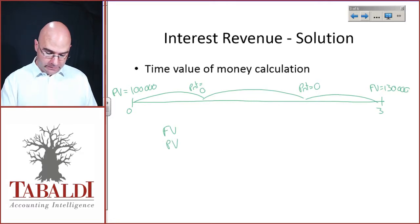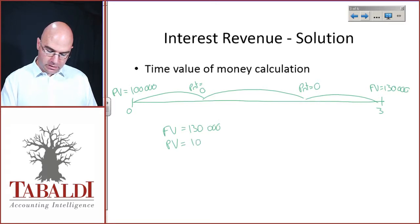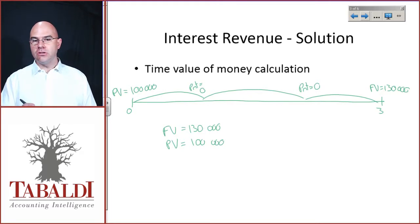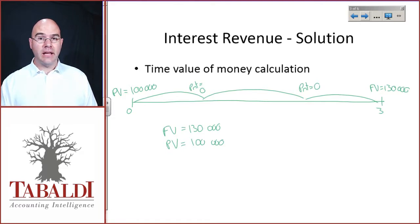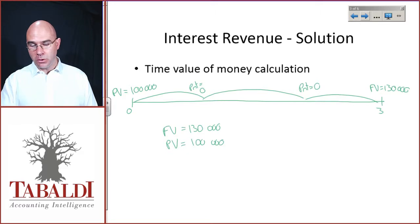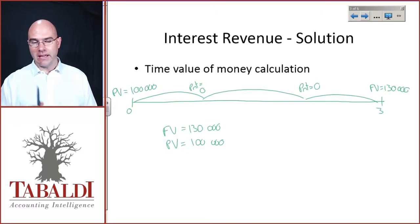Let's put those into our calculator. The future value is 130,000. The present value is 100,000. Work out what is missing — you have payments, periods (i.e. n), and interest rate. Push pause, work out what element is missing, and calculate it.